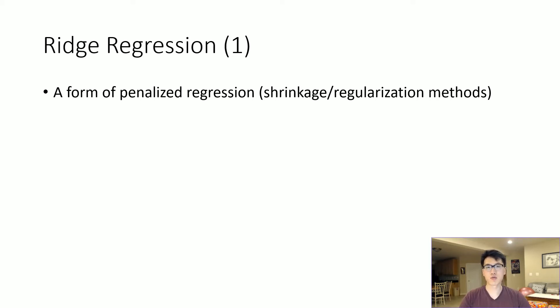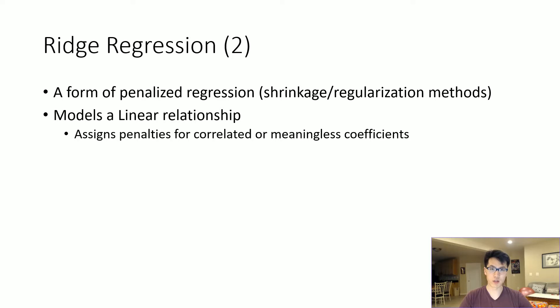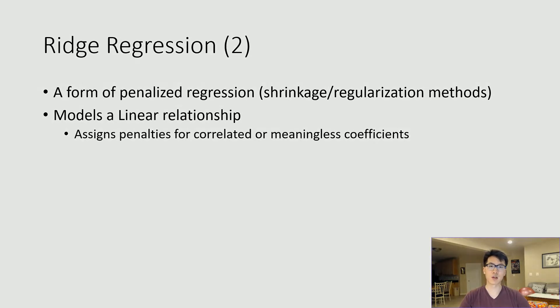We use ridge regression to find results similar to linear regression. It models a linear relationship, but when we have many variables and few rows, this type of regularization is best to use in those circumstances.